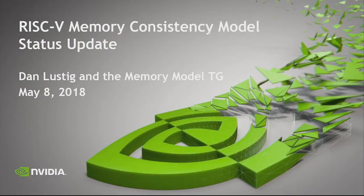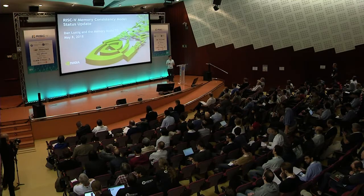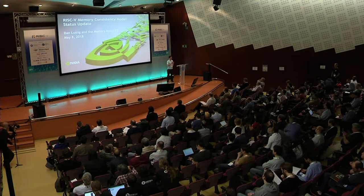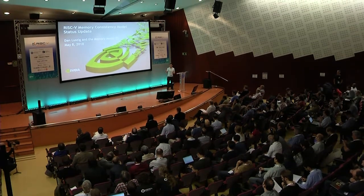Hello everybody. My name is Dan Lustig. I am the chair of the RISC-V Memory Consistency Model Task Group, which you've already heard a little bit about from some of the earlier talks today. My goal here in 15 minutes or so is obviously not going to be to walk through every detail of the memory model, but more just to give a status update of where we are, what we've accomplished over the past year or so since we originally formed, and to walk you through what's in the current spec since we're now up for ratification.